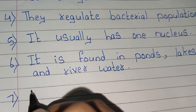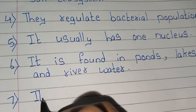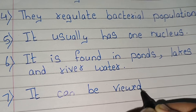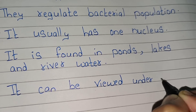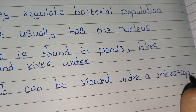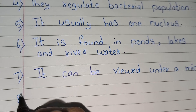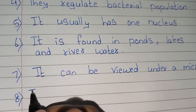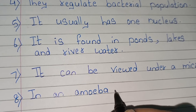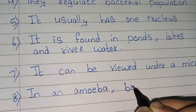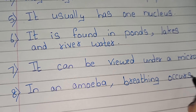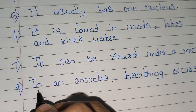Point number seven, it can be viewed under a microscope. Point number eight, in an amoeba, breathing occurs through the cell membrane.